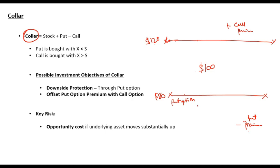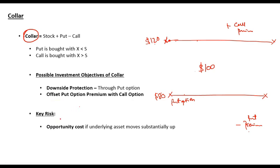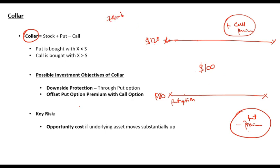A collar can be applied to a stock, an interest rate, or any other asset. For example, you can create an interest rate collar by selling a call option at a higher interest rate and buying a put option at a lower interest rate. If the two premiums are equal, then you have no net cash flow from premiums — that particular collar is known as a zero-cost collar.